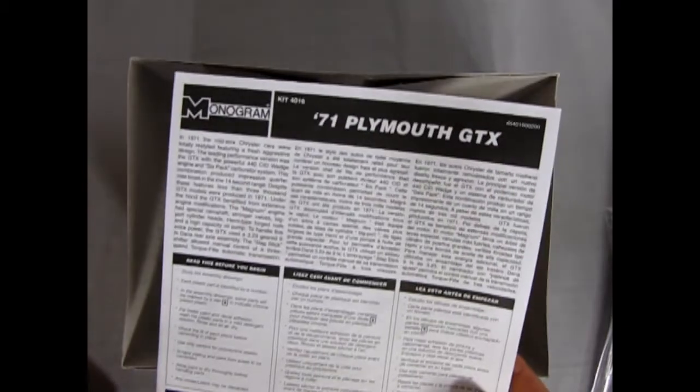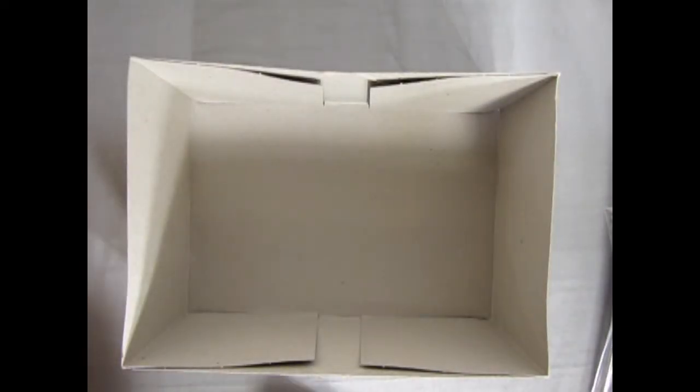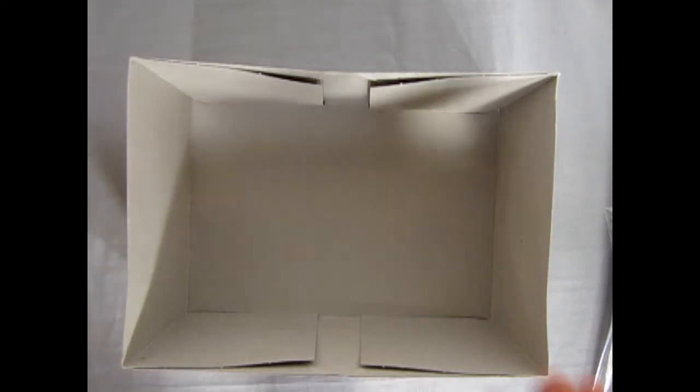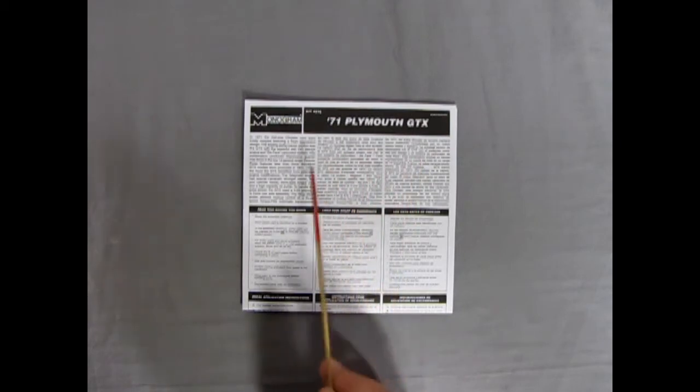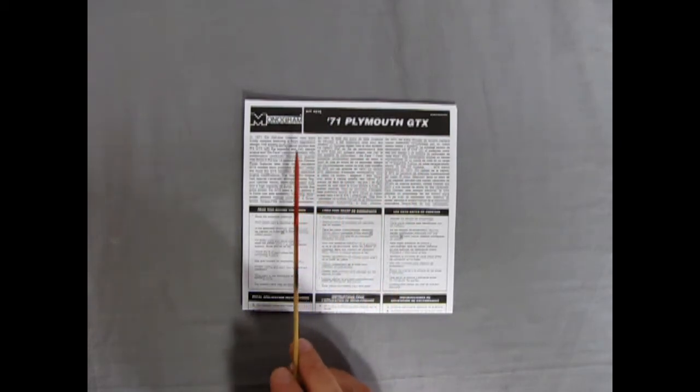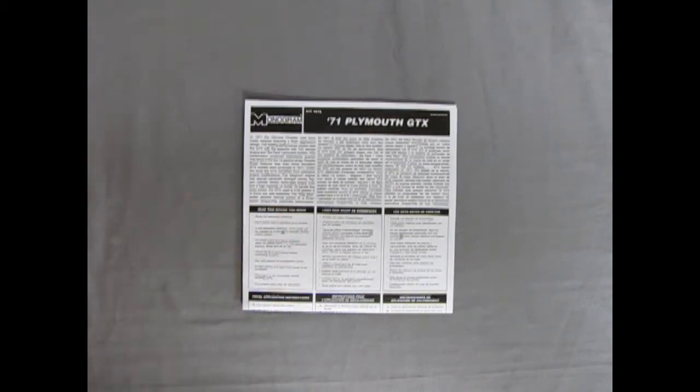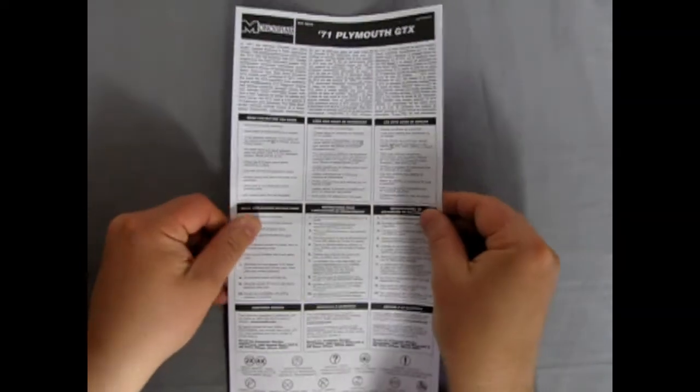Let's clear this out of the way and look at our instruction sheet. Here we have our 1971 Plymouth GTX instruction sheets - there's no picture of the car on the front, which is kind of odd, but they do give you a write-up here in English, French, and Spanish. I'm going to use the English one in our description down below so you can check that out.